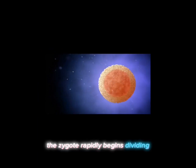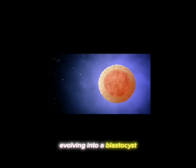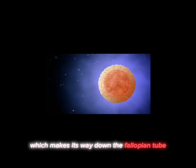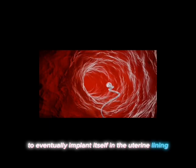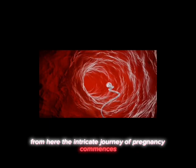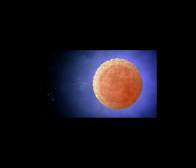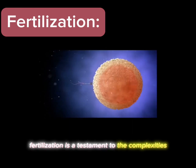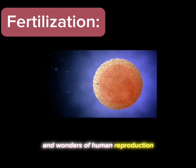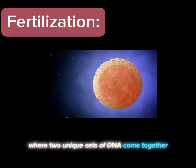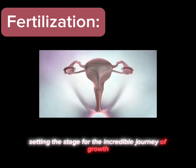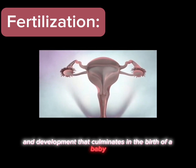The zygote rapidly begins dividing, evolving into a blastocyst, which makes its way down the fallopian tube to eventually implant itself in the uterine lining, commencing the journey of pregnancy. Fertilization is a testament to the complexities and wonders of human reproduction — a key step where two unique sets of DNA come together, setting the stage for the incredible journey of growth and development that culminates in the birth of a baby.